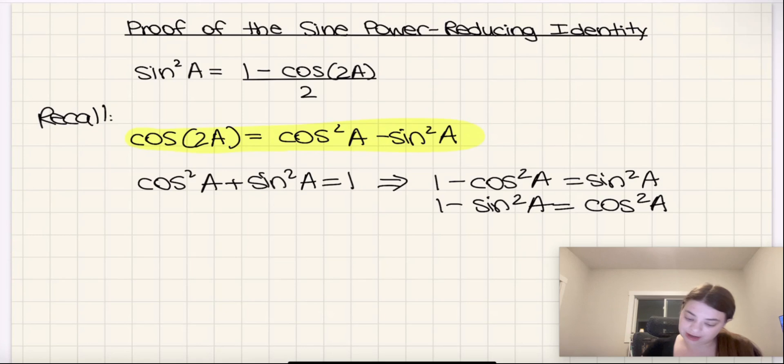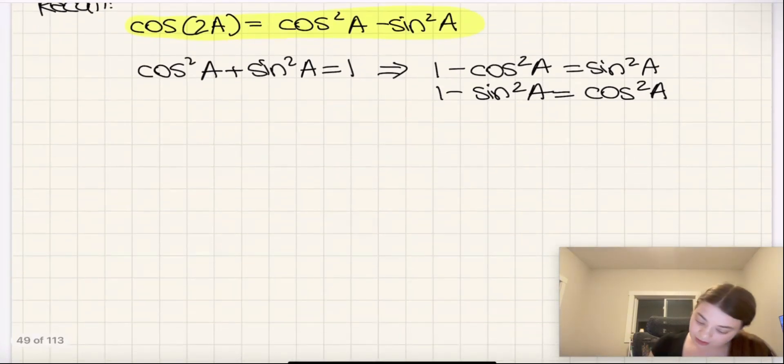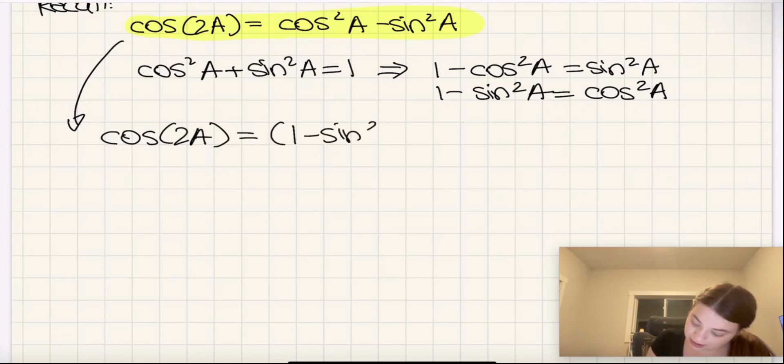So what I'm going to do next is substitute this in. Cosine 2A equals 1 minus sine squared A, replacing cos squared A, minus sine squared A. Therefore, cosine 2A equals 1 minus 2 sine squared A.